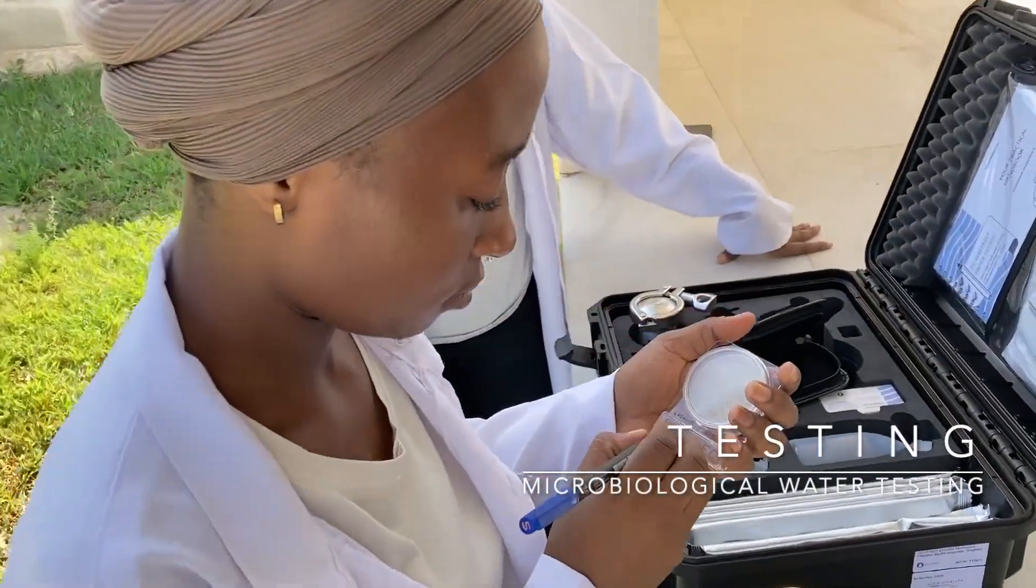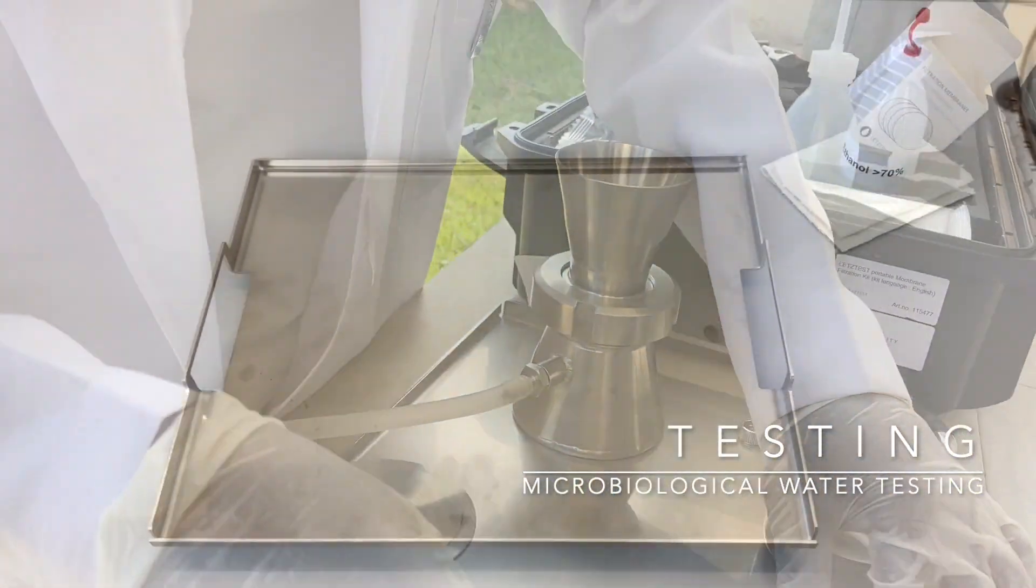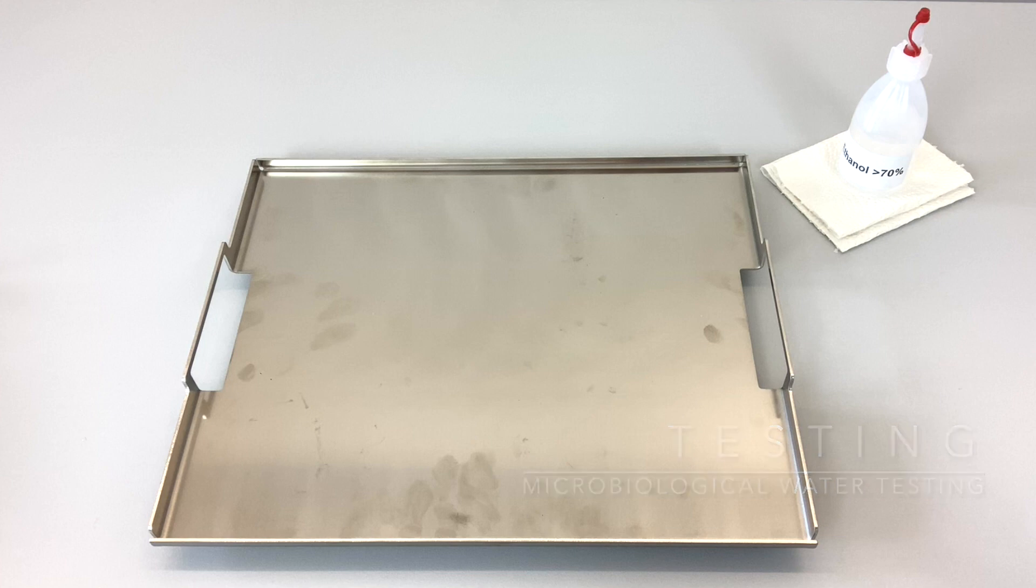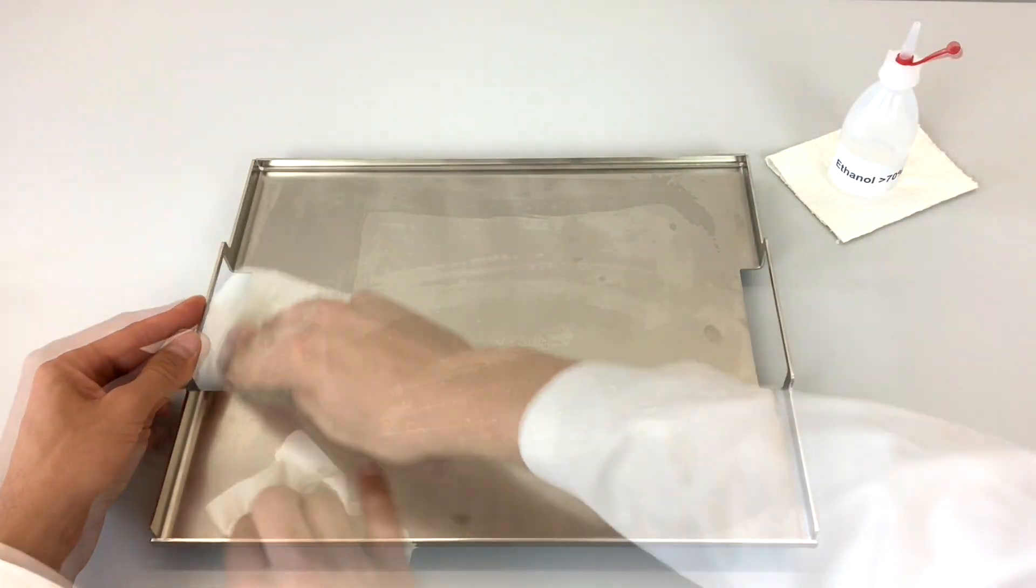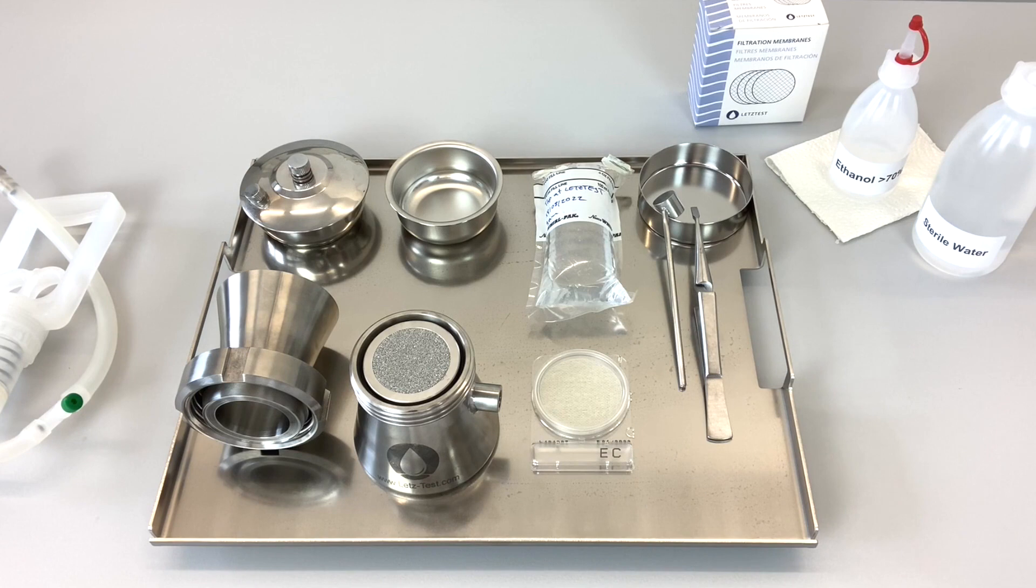Once the water samples have arrived at the central location for testing, set up the work area. Use the portable lab bench if you do not have a flat and easily sterilized work surface. Disinfect your hands and the work surface with alcohol, then set up the test equipment.